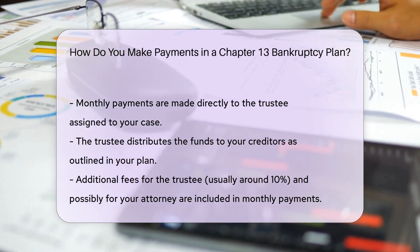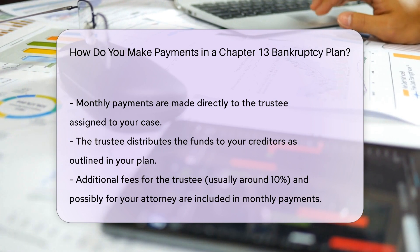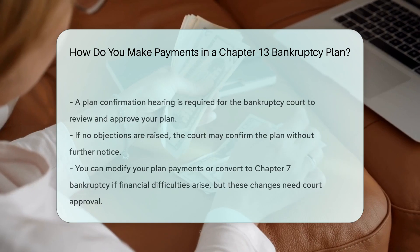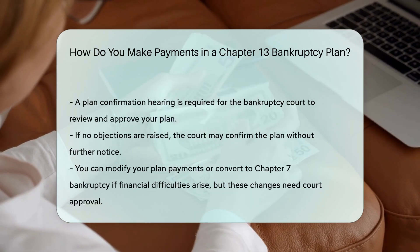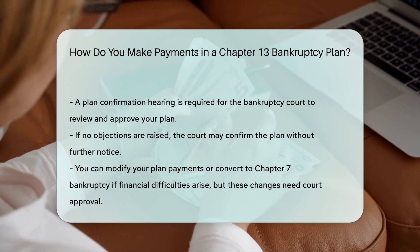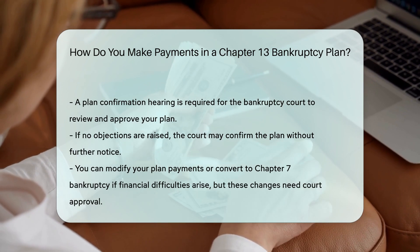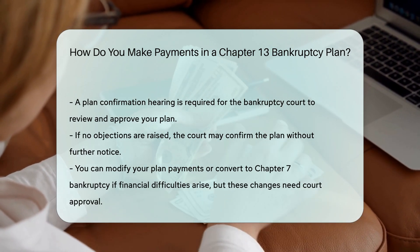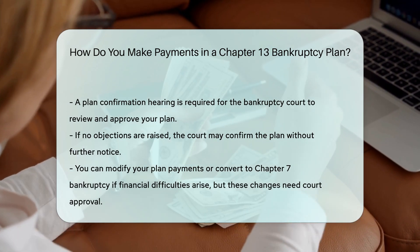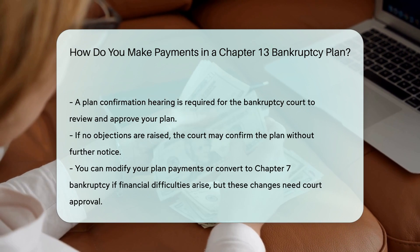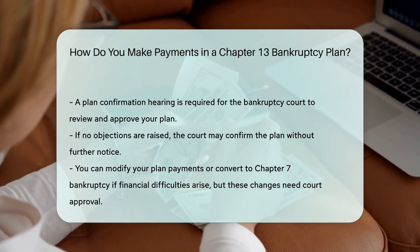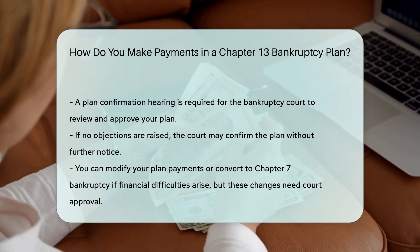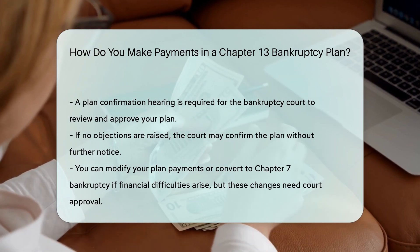Plan confirmation hearing. Your plan must be confirmed by the bankruptcy court. This involves a hearing where the court reviews your plan and any objections from creditors or the trustee. If no objections are filed, the court may confirm the plan without further notice.